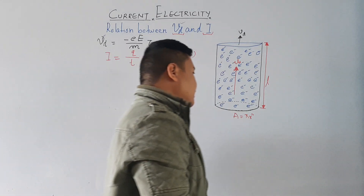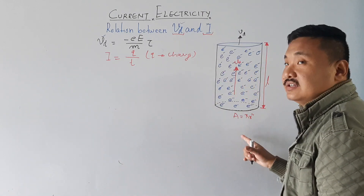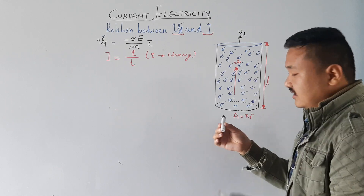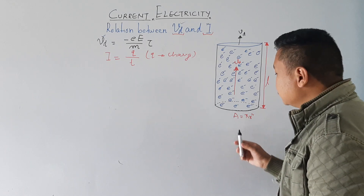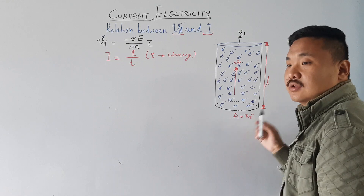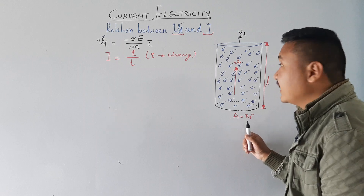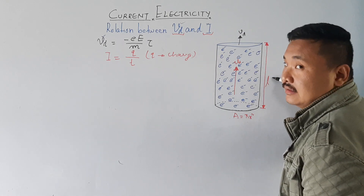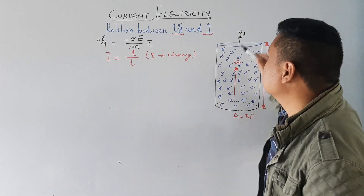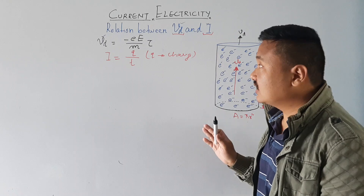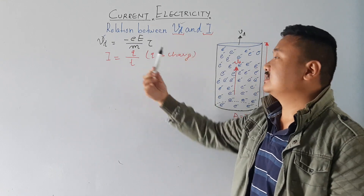In this conductor, I have considered a cylindrical conductor. This A is the area of cross-section, which is equal to pi R square. You can also write A or pi R square, because this is a circle and the area of a circle is pi R square. Let the length of this conductor be L, and in this conductor there are many electrons moving with drift velocity Vd. Because of that, I am getting the current.